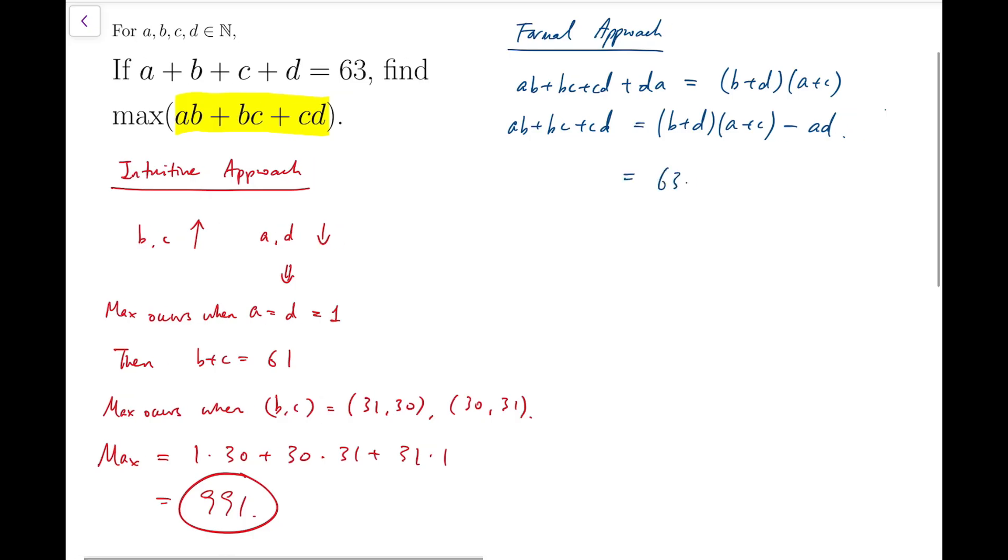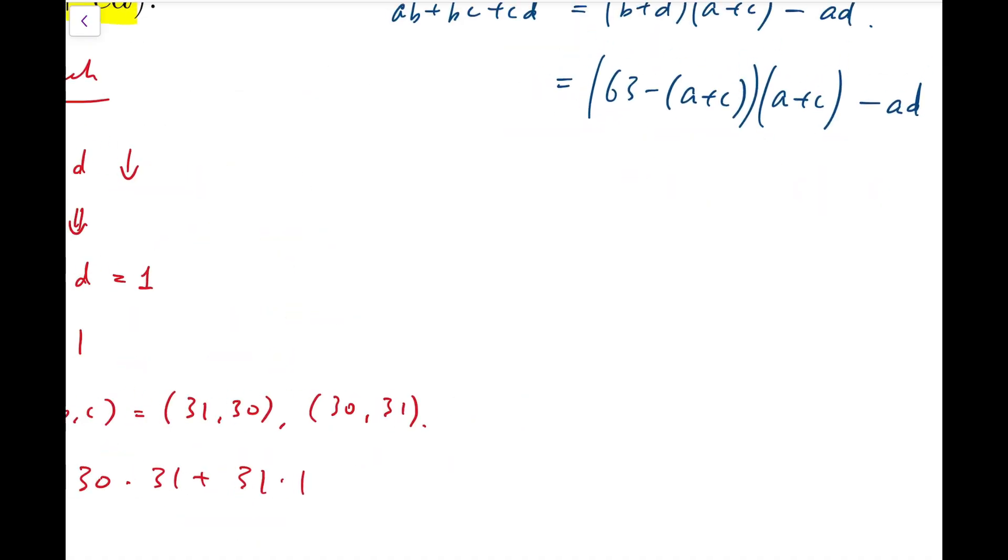Now, because the sum of the four numbers is 63, we can say that this is equal to 63 minus A plus C times A plus C minus AD.